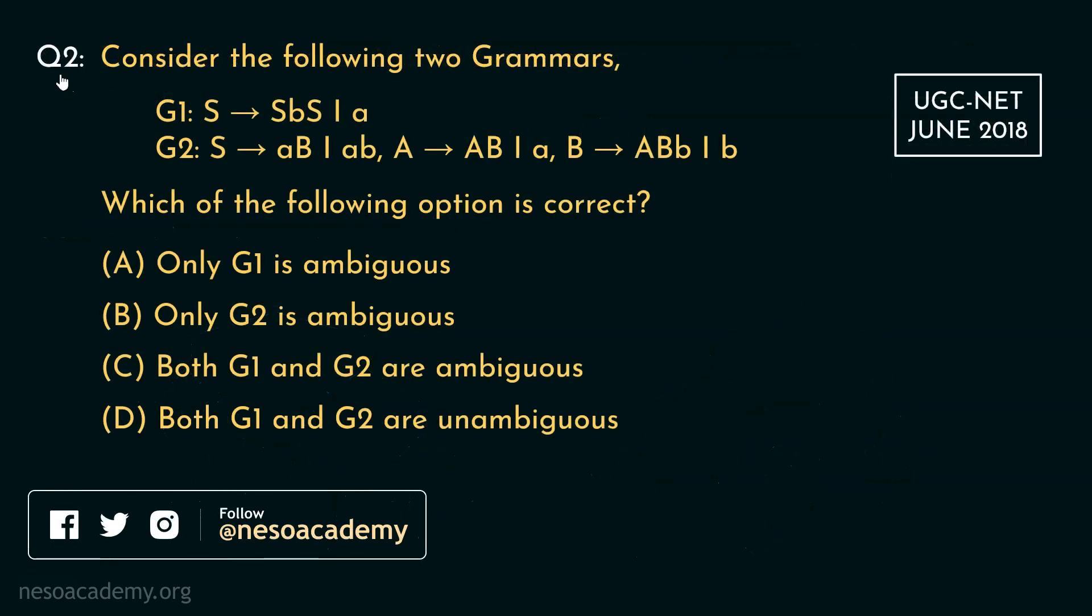Observe this question: consider the following two grammars. Two grammars, G1 and G2 are given and they have their respective production rules. Now the question is, which of the following option is correct? A. Only G1 is ambiguous. B. Only G2 is ambiguous. C. Both G1 and G2 are ambiguous. D. Both G1 and G2 are unambiguous. So basically, we have to test whether G1 or G2 is ambiguous.